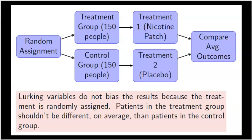This bottom statement is so important: lurking variables do not bias results because the treatment is randomly assigned. Patients in the treatment group shouldn't be different on average than patients in the control group. Lots of kids ask about confounding lurking variables — won't they lead to bias? No, because trust in the randomization process makes two groups that are on average very, very similar. Could there be a couple more females or exercisers in one group? Sure. But on average the two groups are very similar, and that is why there is no bias.